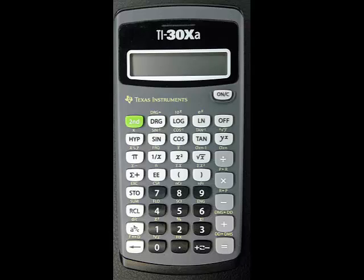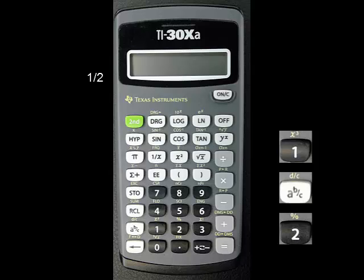You can also convert numbers in fractional form to decimal form and back. The conversion is done using the second function of the left arrow key at the bottom left. Let's convert the fraction 1 half to decimal form. Enter the fraction as 1, ABC button, 2. You'll see 1 over 2 appear on the screen.